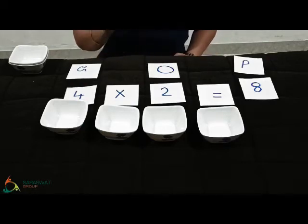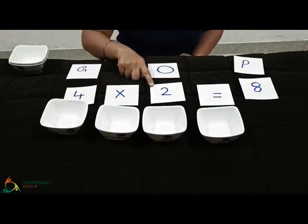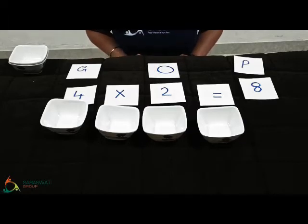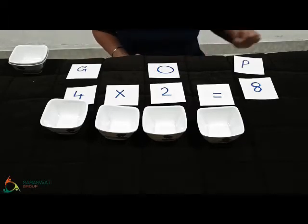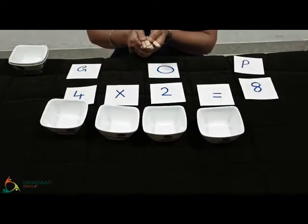Now, how many objects are to be placed in each group? You can see 2. So it means that 2 objects are to be placed in each group. So for objects, I am using these kind of candy sticks.